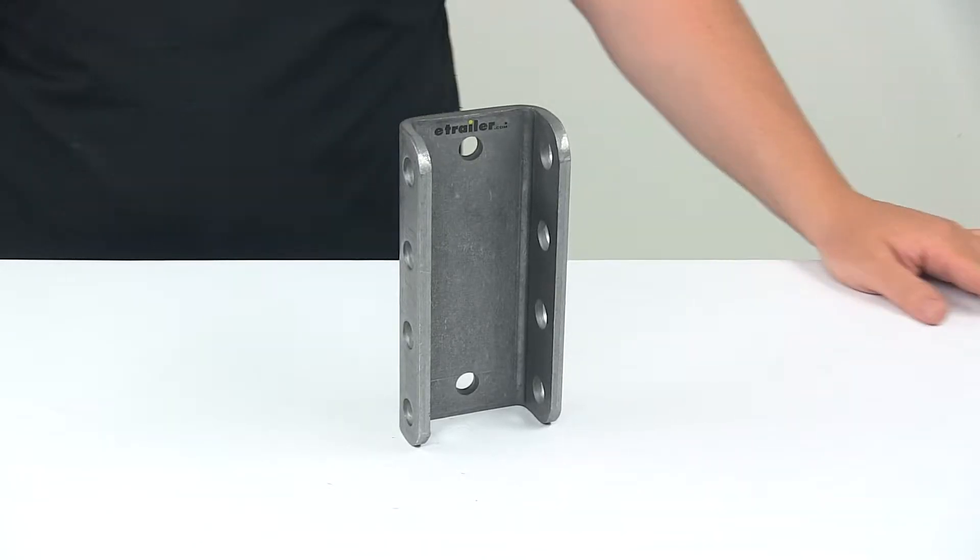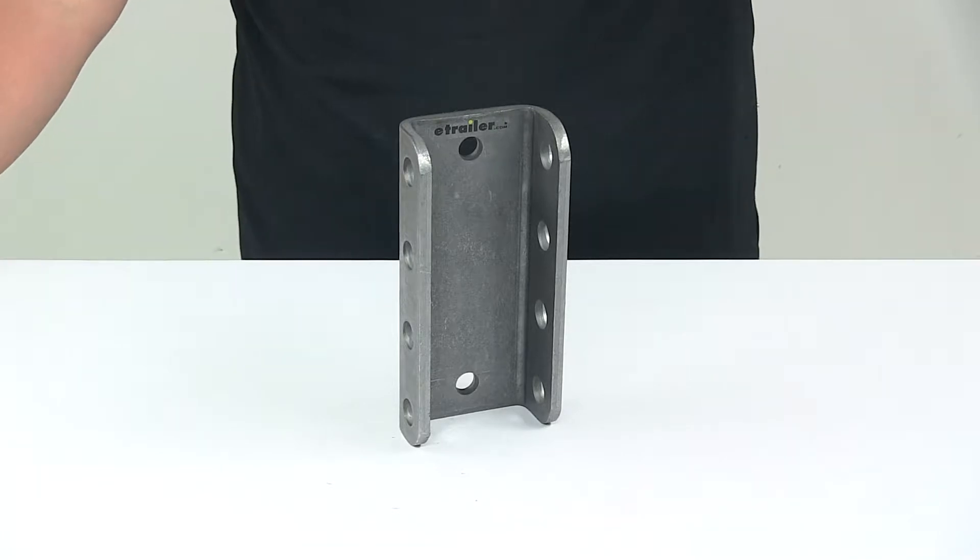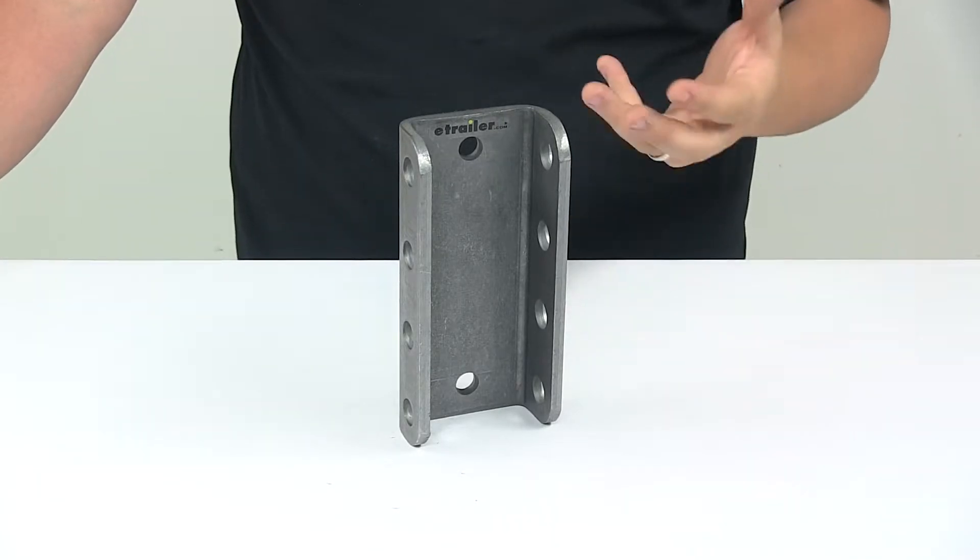Today we're taking a look at a three position channel bracket. This unit connects your trailer's coupler or tow eye at the correct height for level towing.